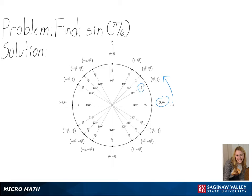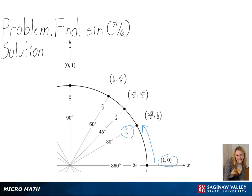Since we are finding the sine value, we will be taking the y-coordinate of our point, which in this case is one half. So for sine of pi over 6, we get one half as our final answer.